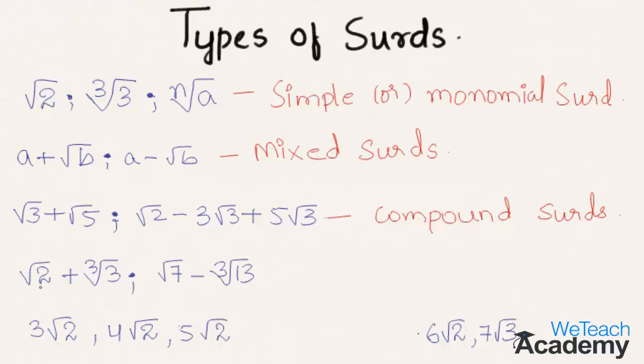Coming to the next example, we have root 2 and 3 root 3, which are both surds. Here it consists of two surds, so this is called a binomial surd.